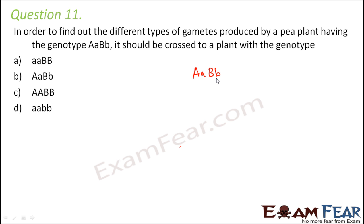As mentioned before, if you want to find out the genotype of an unknown individual, or the number of gametes that would be produced, the type of cross you will prefer is always going to be a test cross. A test cross is performed to find out the genotype or the number of gametes that would be produced by an individual, and in order to find that out, we cross that unknown individual with a homozygous recessive individual. So therefore option D is the right option.